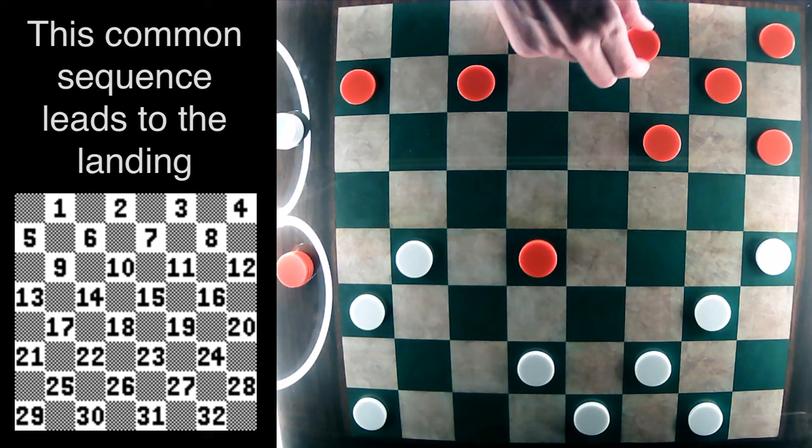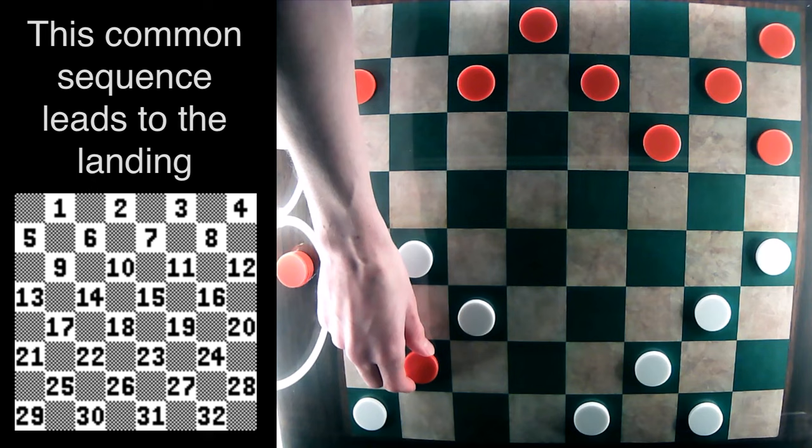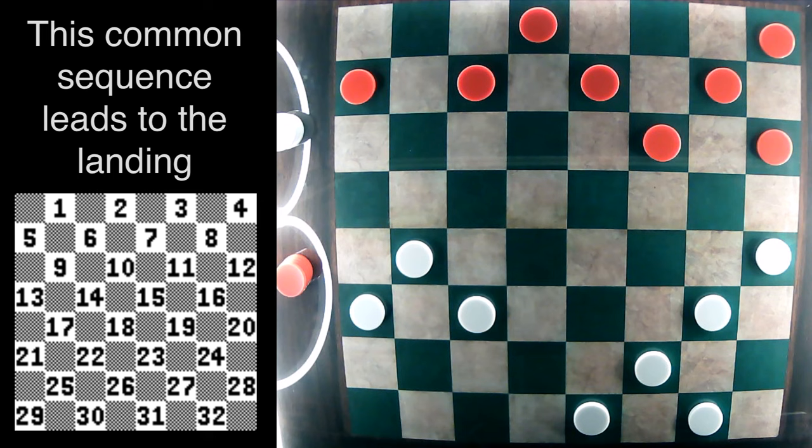And red is going to go into the center square and capture with 14-18. After 30-26, 3-7, and then 26-22, capture.